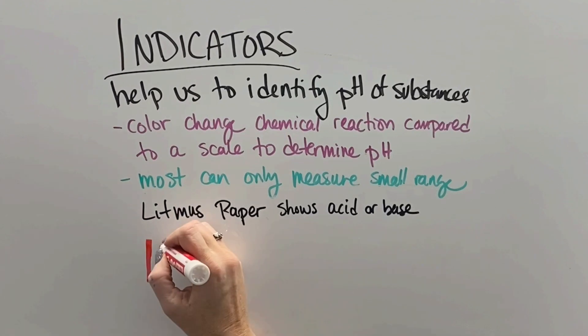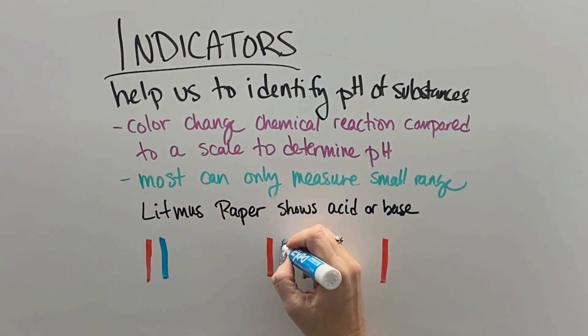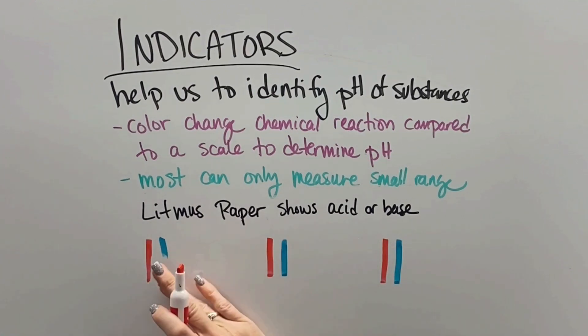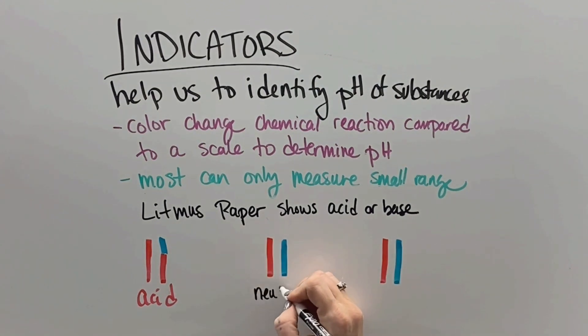So we have these things called indicators that help us identify the pH of substances by undergoing color change chemical reactions to tell us whether something is an acid or a base. Litmus paper comes in red and blue. And so if we take both colors and dip them into an acid, the red stays red and the blue turns red, we get an acid.